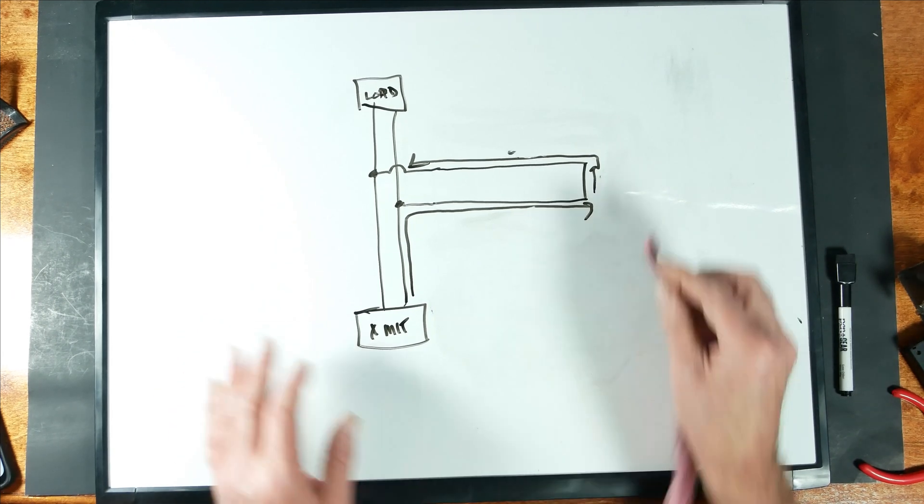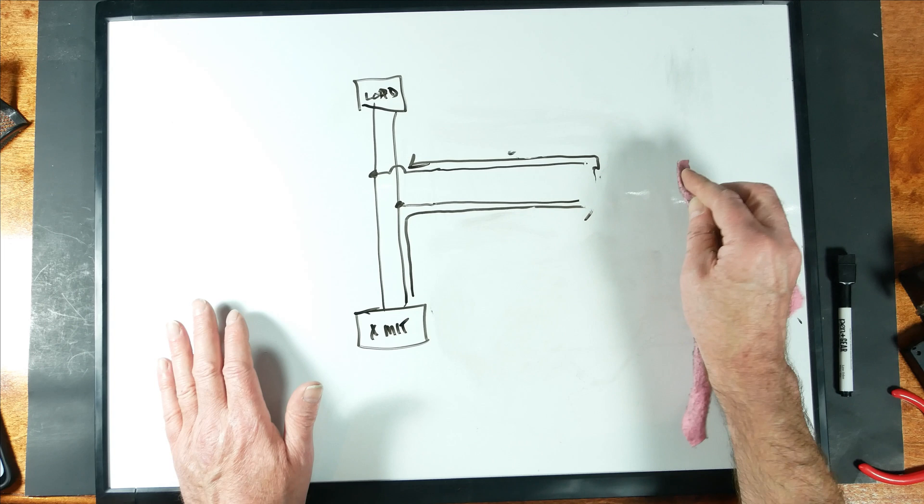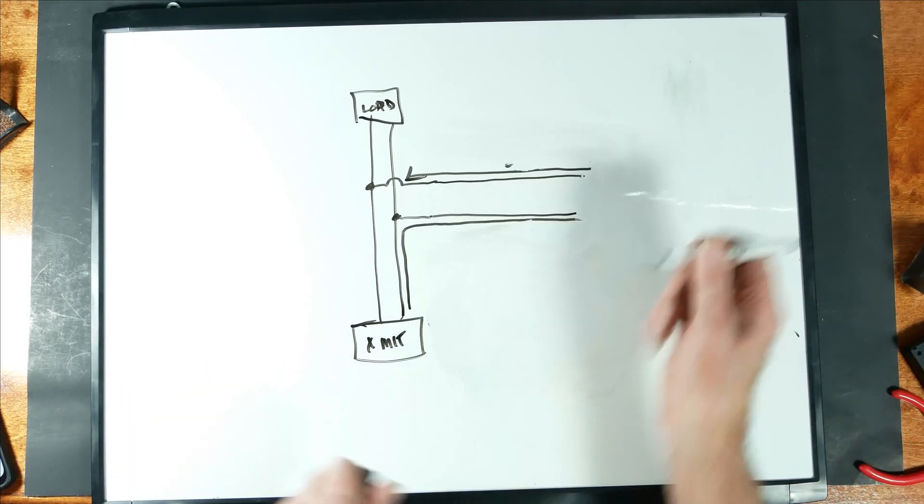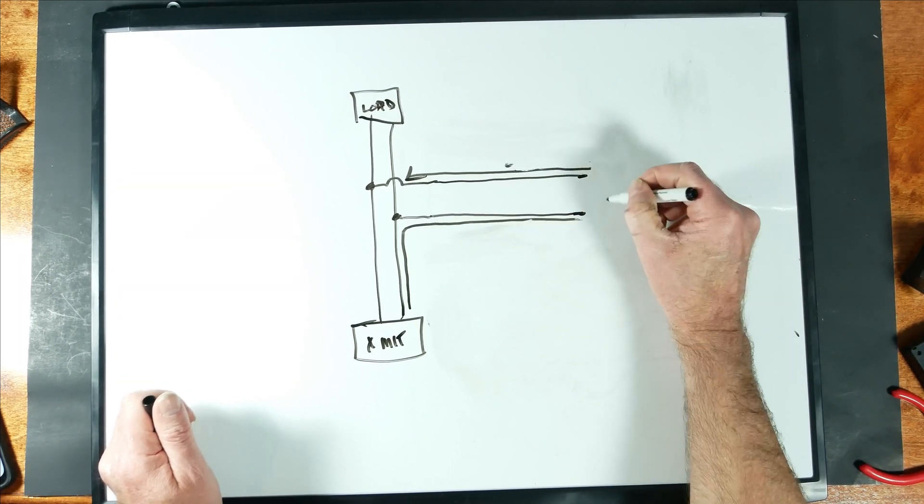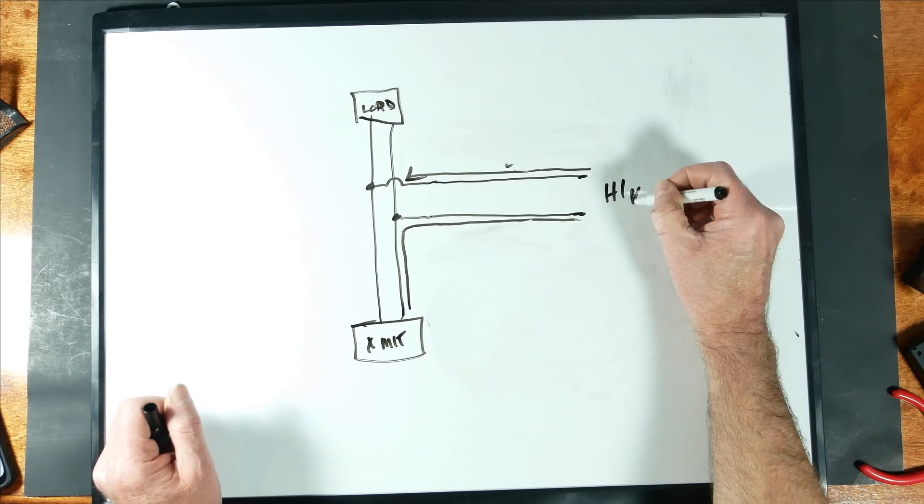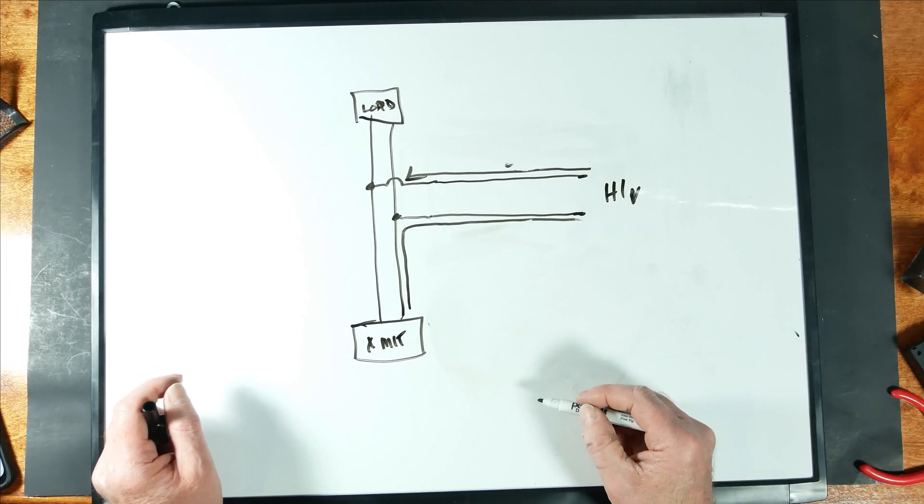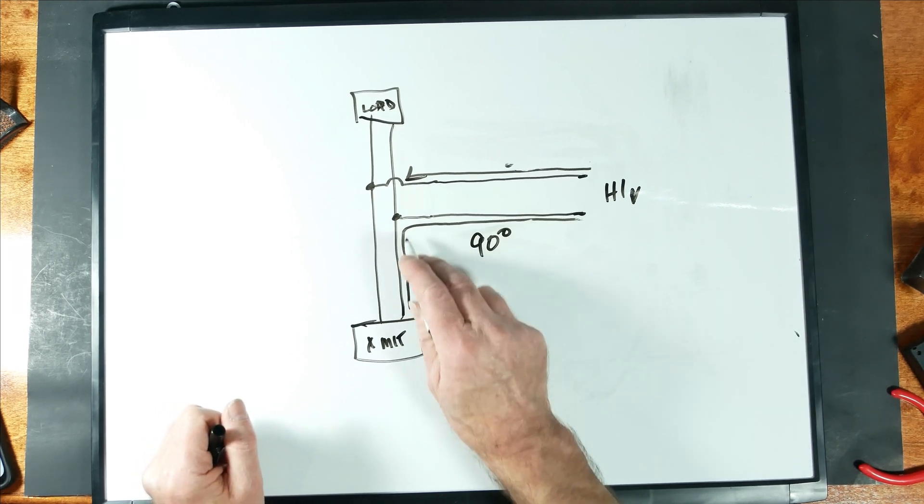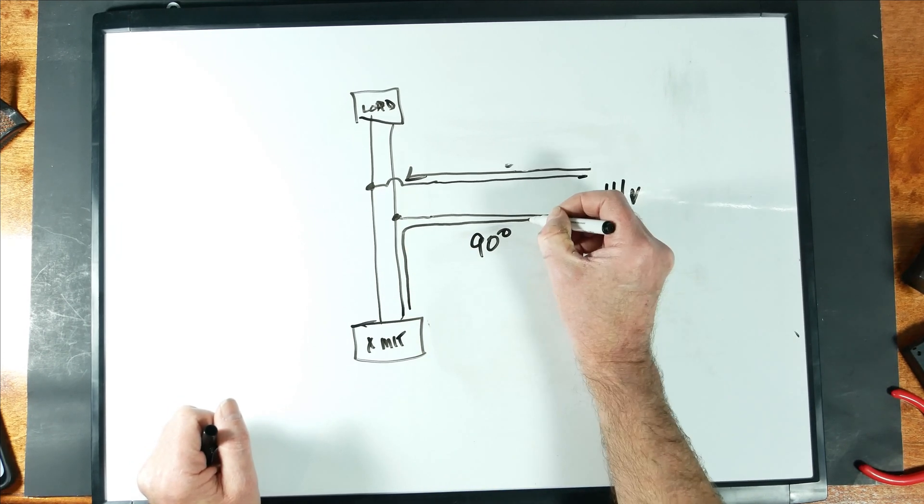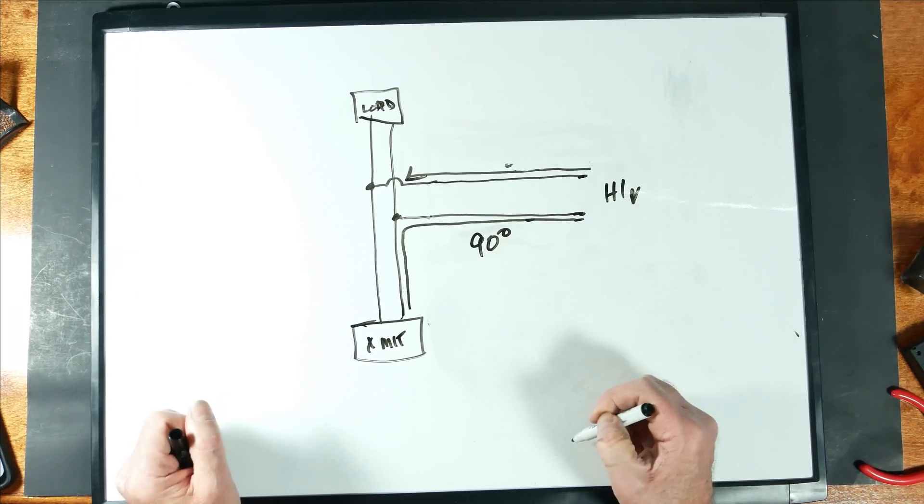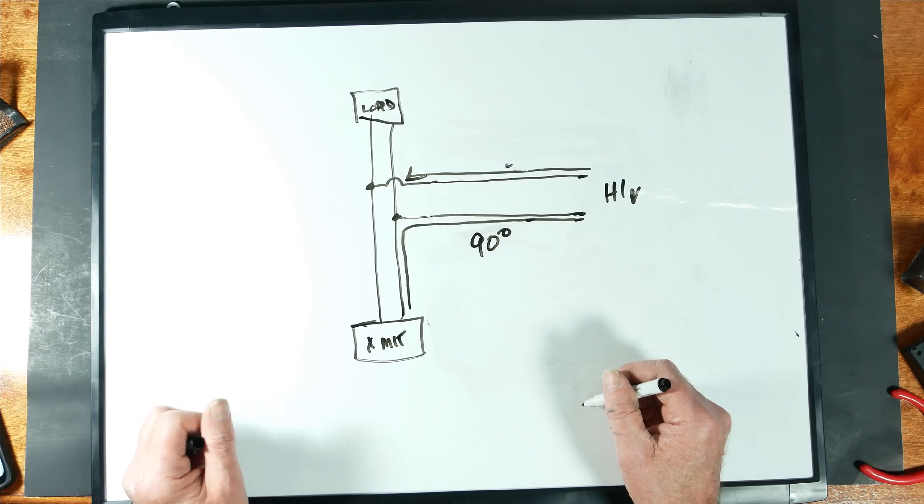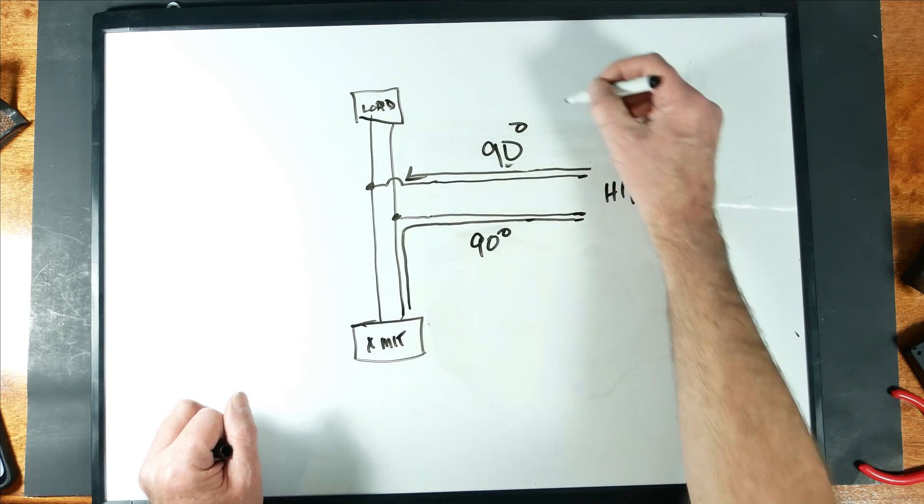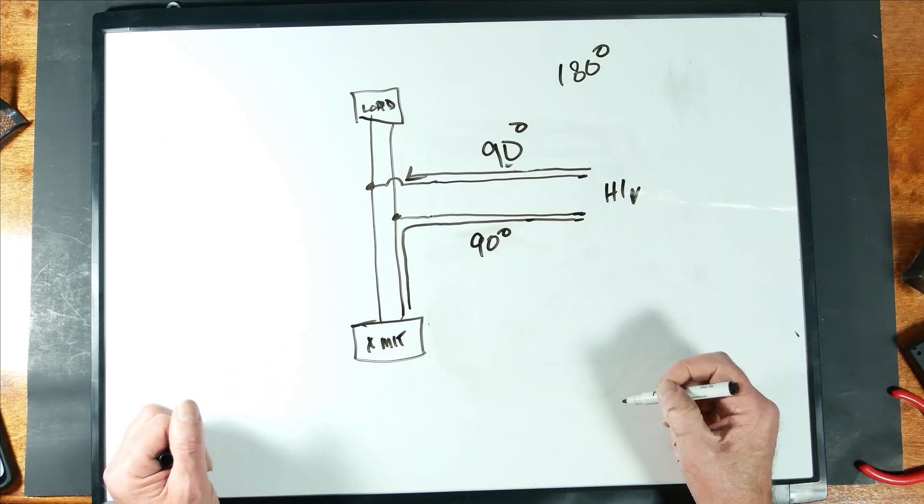Now what happens if we open this stub up? Well then, with the stub open, all of a sudden this becomes high voltage. And this ends up being our short over here. And the way that it happens is we still have 90 degrees coming out of the transmitter through a quarter wavelength, 90-degree shift in waveform. But here, because there's nothing at the end of it, there's no termination, it gets reflected straight back. No phase shift. So 90 degrees over, 90 degrees back. We've changed our waveform, 180 degrees.